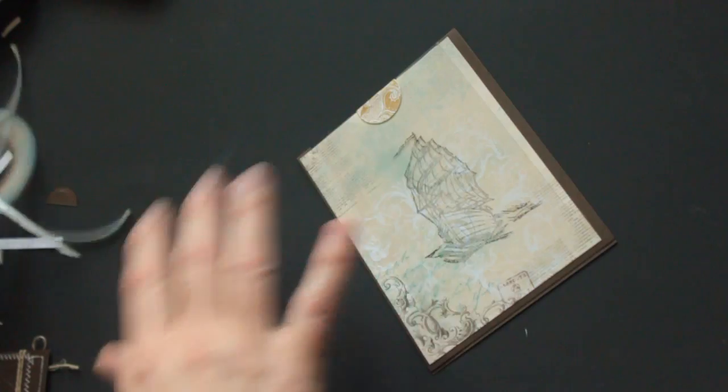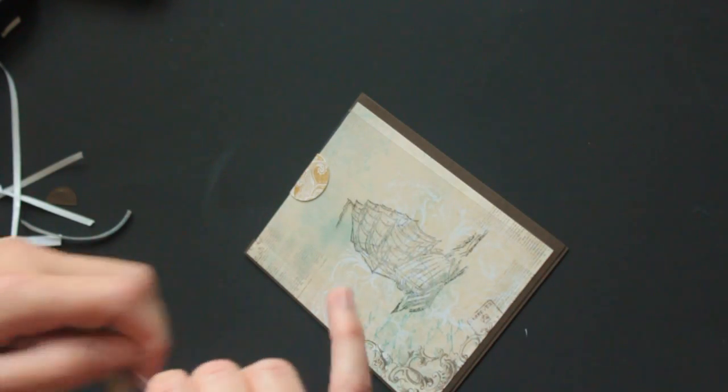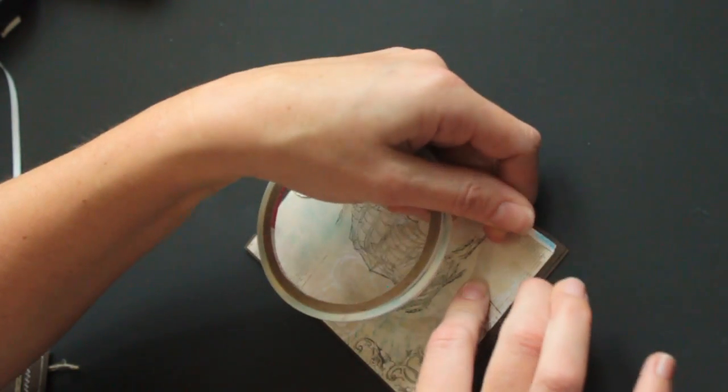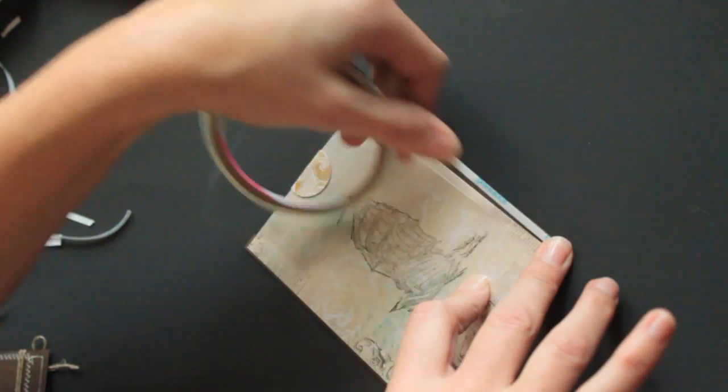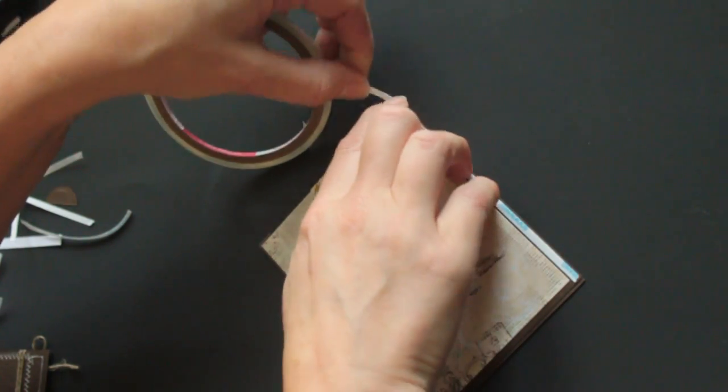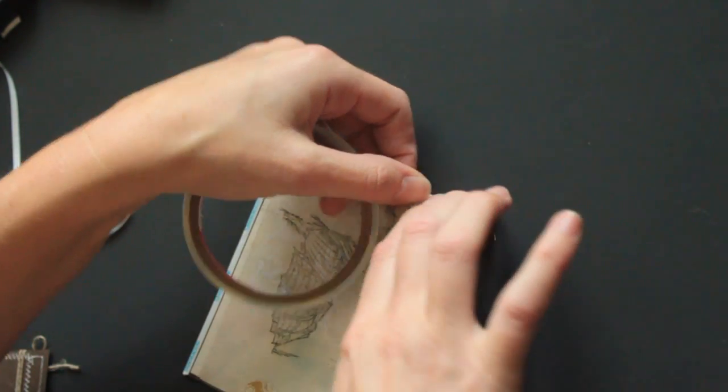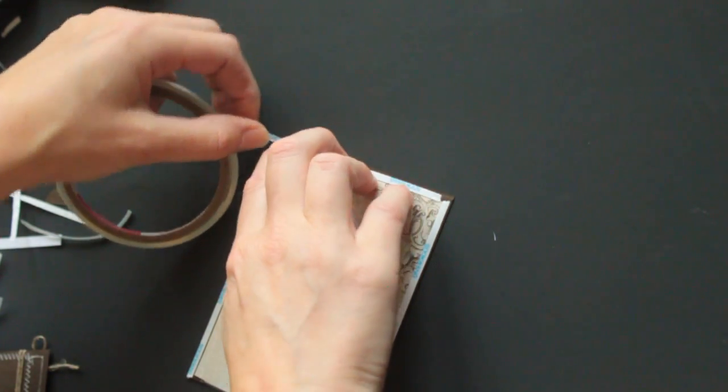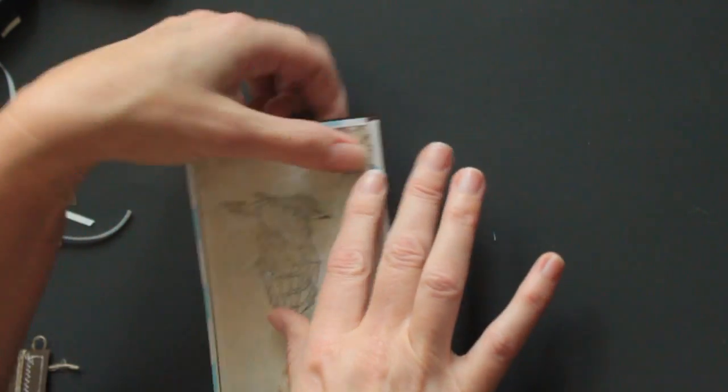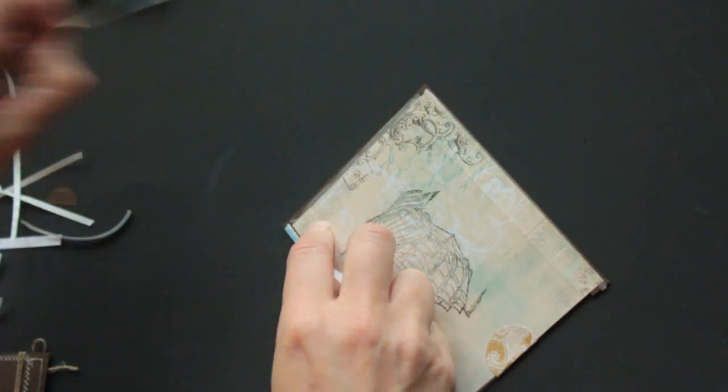So now we're going to add more adhesive. Adhere the front to our slide up sliding part. And then your card. It's pretty much done.